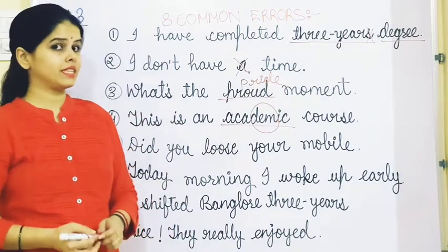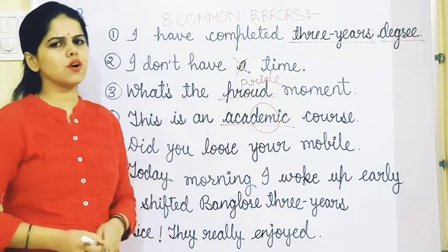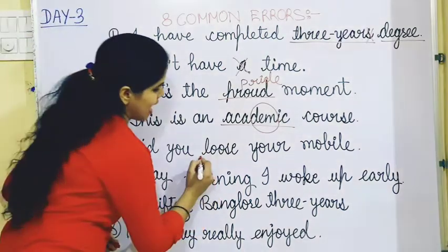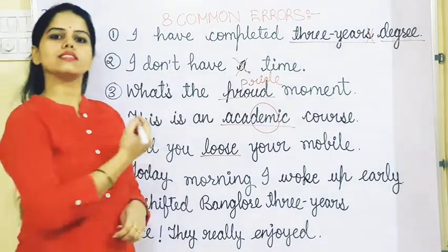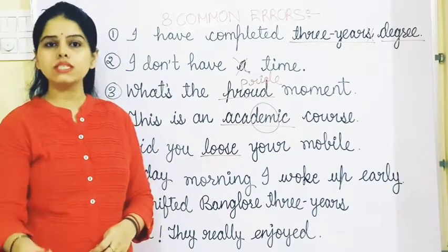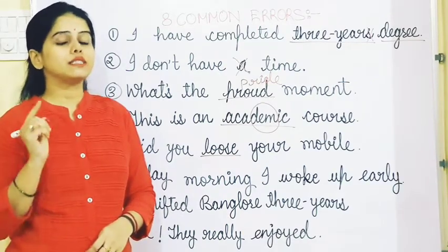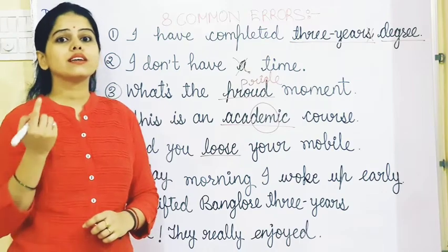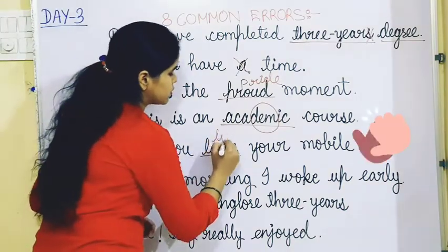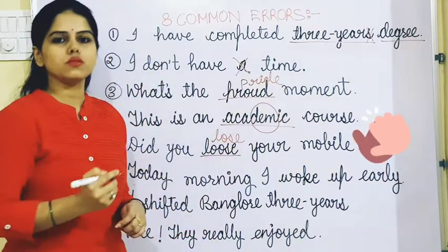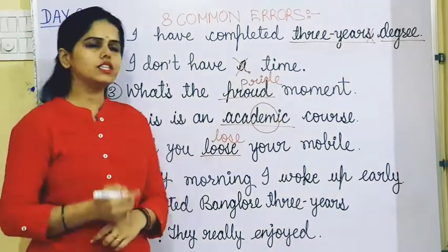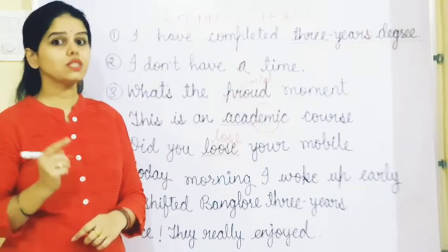The fifth sentence is: Did you loose your mobile? The mistake is the spelling. L-O-O-S-E, 'loose', is an adjective meaning 'not tight'. Instead, we have to use L-O-S-E, 'lose', which is the opposite of 'find'. So the correct sentence is: Did you lose your mobile?